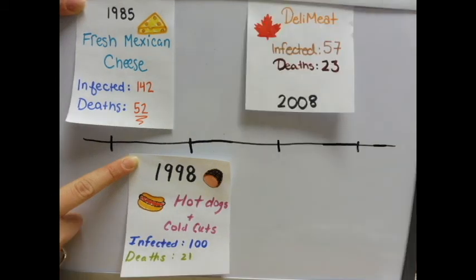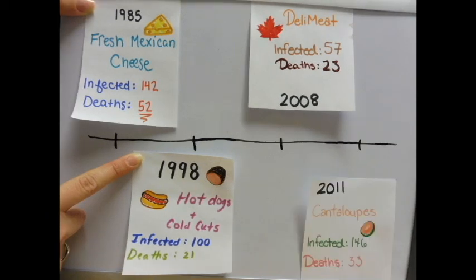Listeria infected 57 Canadians and caused the death of 23 individuals after Maple Leaf Foods recalled low-sodium deli meat in 2008. In 2011, cantaloupes were infected with Listeria, causing 146 infections and 33 deaths among Americans. This is the third deadliest foodborne outbreak in American history.